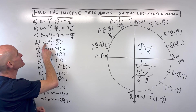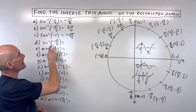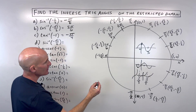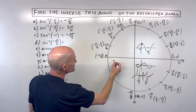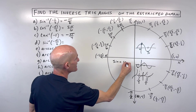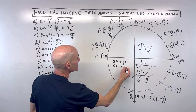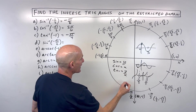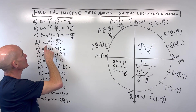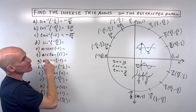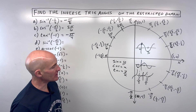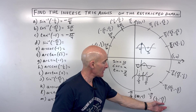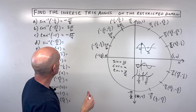For letter D: what's the sine inverse of negative root three over two? Remember sine refers to the y-coordinate. Sine of what angle equals negative root three over two is asking where is the y-coordinate negative root three over two? That's going to be negative pi over three.